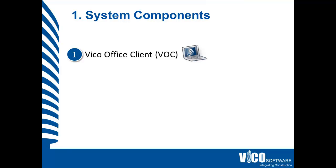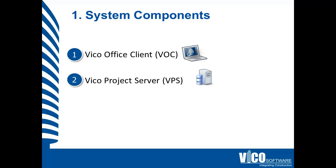Let's check out the Vico system components. The first one is the VicoOffice client, or VOC for short — it's the main user interface that you'll be using. Number two is the Vico project server, VPS for short, and this is the database where all of your projects will be stored.